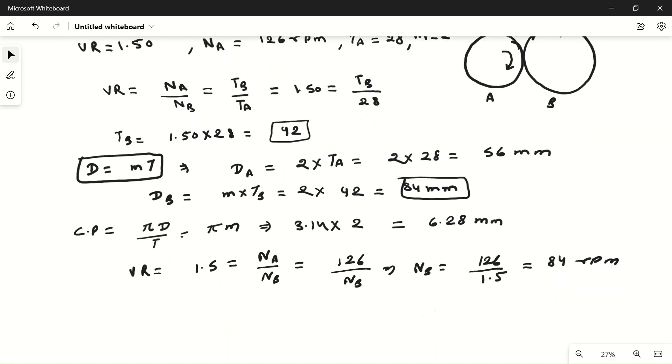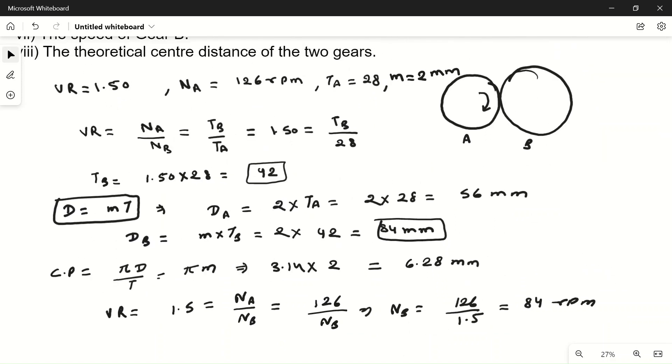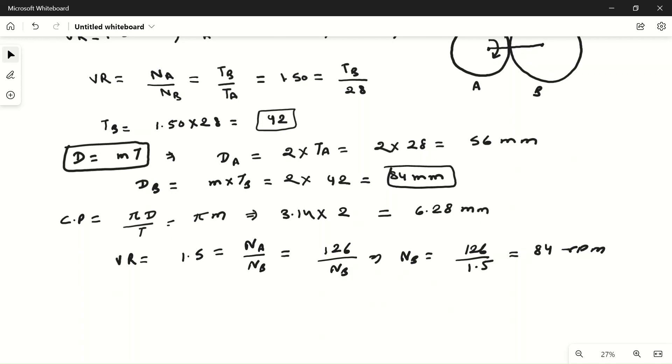What will be the theoretical center distance? The theoretical center distance is equal to sum of the radius of gear A and gear B. We have diameter of these two gears. Center distance is one by two DA plus DB, which will be equal to one by two, 56 plus 84.